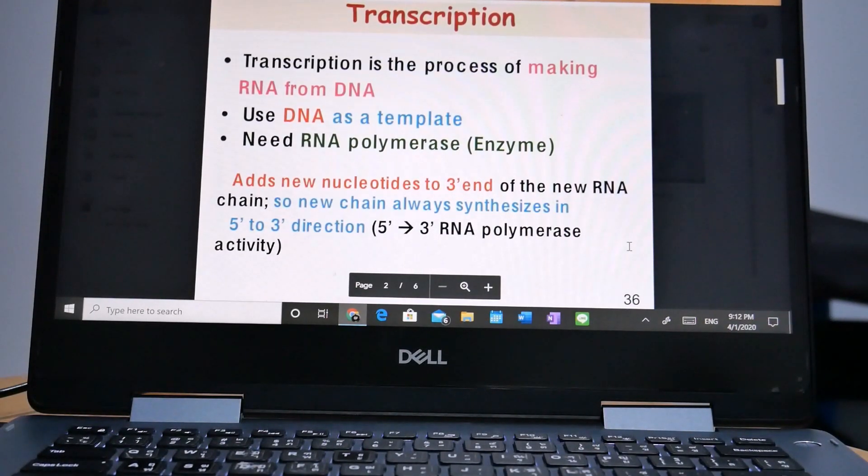RNA is made by RNA polymerase and it requires a DNA template. RNA polymerase uses one of the DNA strands as a template to make new complementary RNA molecules.